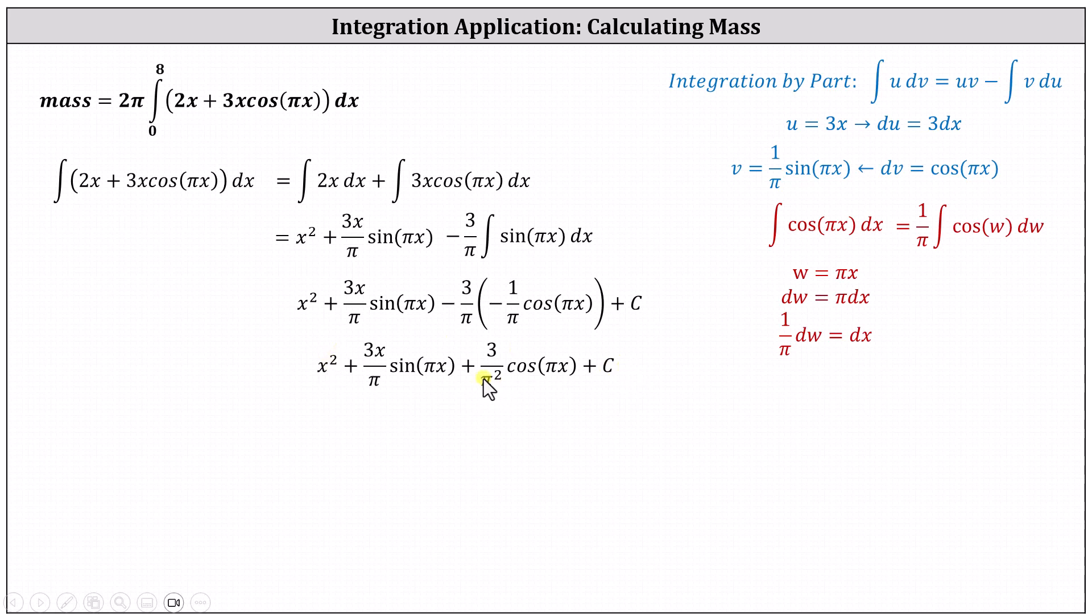This is the antiderivative, which means we can now drop the C and use this to evaluate the original definite integral. Now we need to determine 2π times the difference of F(8) and F(0).